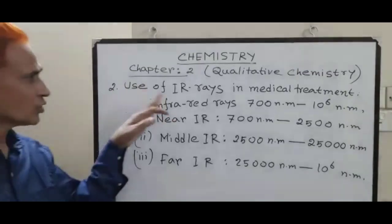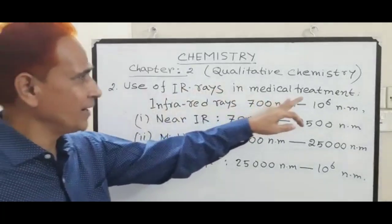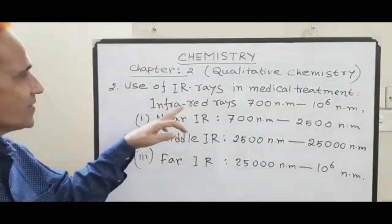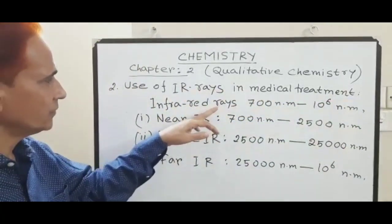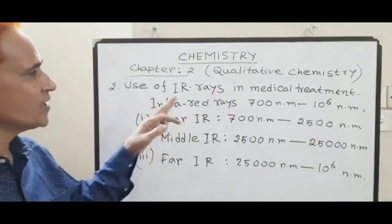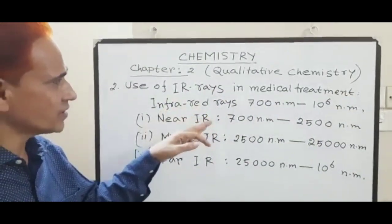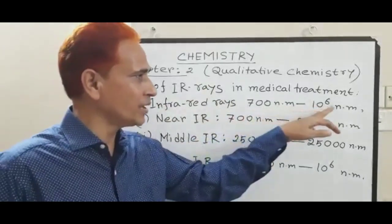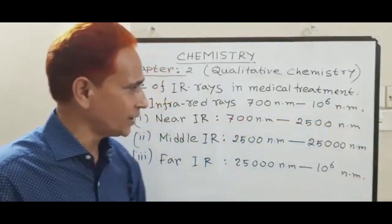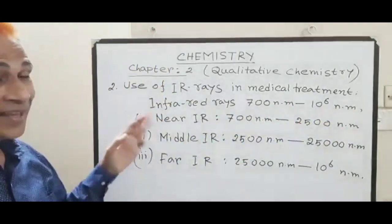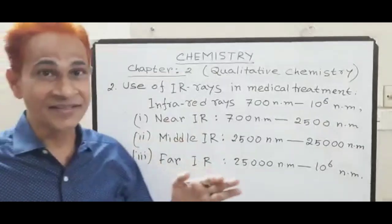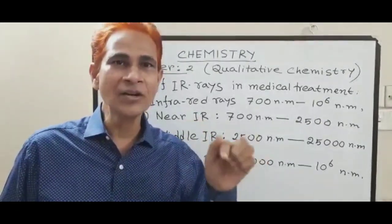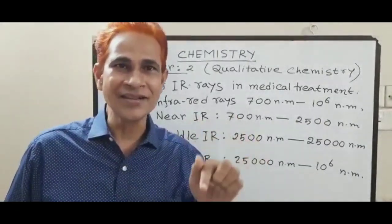Now, use of IR rays in medical treatment. IR ray means infrared radiation. The wavelength of infrared radiation lies in between 700nm to 10⁶nm. The IR ray is divided into 3 segments depending on the heating effect.